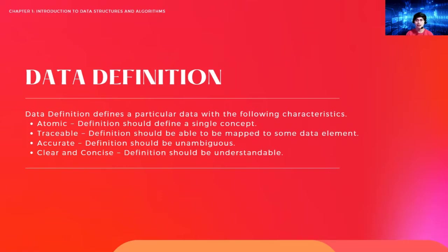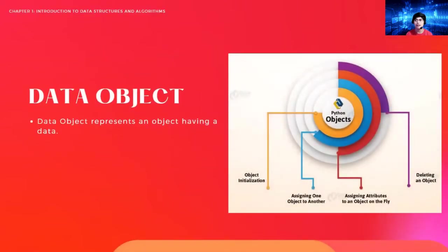In data definition, we also have the data object. When it comes to programming, we deal with data objects. The data object represents an object having data. When you start coding, you will be dealing with these objects. I'll give you some examples later on.